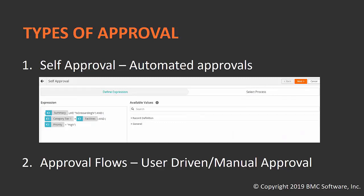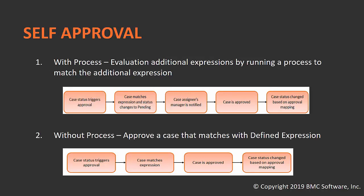Let us look at the types of approval. Self-approval is automated approval based on an expression defined for matching criteria — the approval is triggered and automatically approved based on that expression. The second type is approval flows, which can be user-driven or manual approvals. On screen you can see self-approval with process and without process. With process, it evaluates an additional expression by running a process. Once triggered, it matches the expression, changes the case status from assigned to pending, notifies the case assignee's manager, and once approved, the case status changes based on the approval outcome.